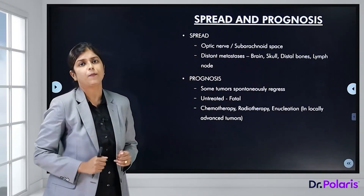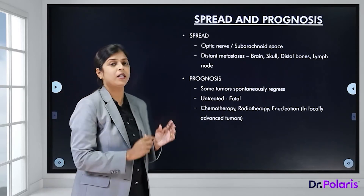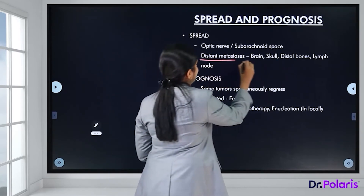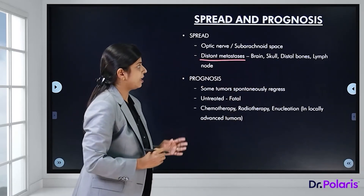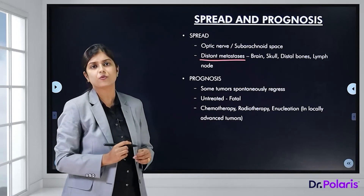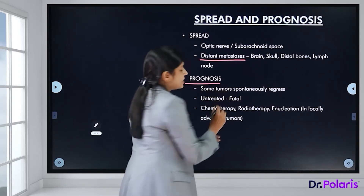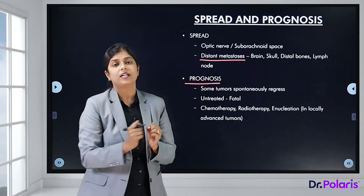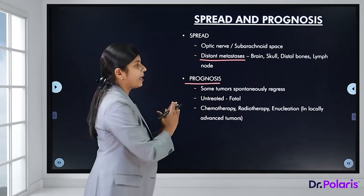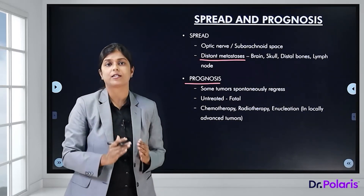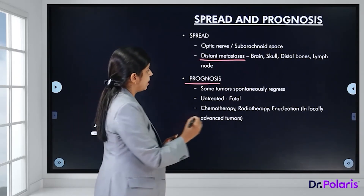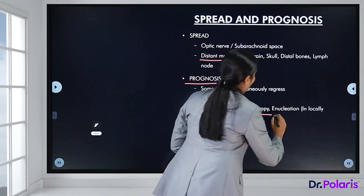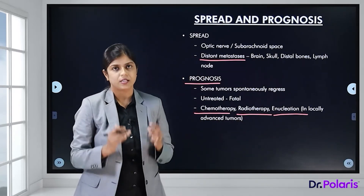Spread can occur to the optic nerve or subarachnoid space, and distant metastasis can reach the brain, skull, bones, or rarely lymph nodes. Sometimes tumours tend to regress on their own, but if untreated the disease is fatal. Spread to the optic nerve or subarachnoid space carries a bad prognosis. Treatment modalities include chemotherapy, radiotherapy, or enucleation in locally advanced tumours.